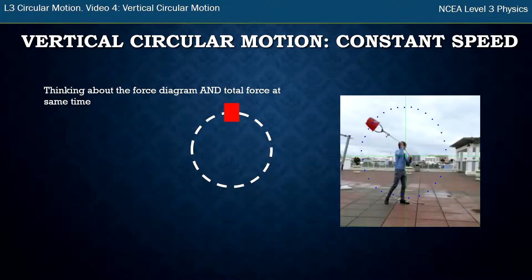So let's think about when the bucket's at the top. So it's still going around at a constant speed and again I think about my force diagram and my total force at the same time. So gravity, it still has gravity. My total force is now going to be downwards because it's always towards the center of the circle and at the top the center of the circle is down from the top.